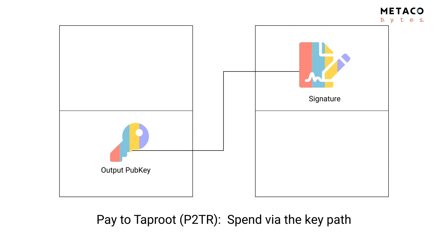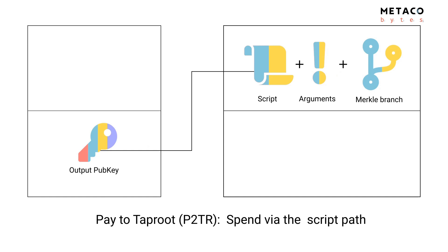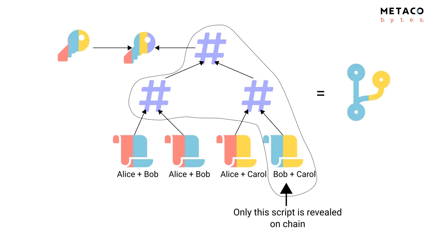You also have another way to spend a Taproot output: using one of the scripts it commits to — the script path. For example, if Bob and Carol want to spend the money but Alice refuses to collaborate and won't provide a partial signature for the internal key, Bob and Carol can fall back to the script path. Like P2SH, they publish the script, the arguments, and a proof that the script is committed to by the output key — this is the Merkle branch.